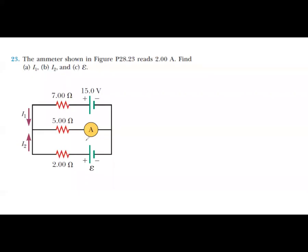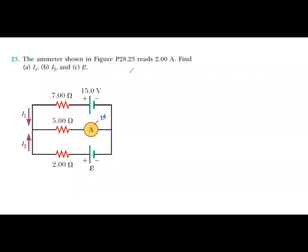Problem 23: we have an ammeter reading 2 amperes. We need to find i1, i2, and E. We apply Kirchhoff's law — both the junction rule and the loop rule.